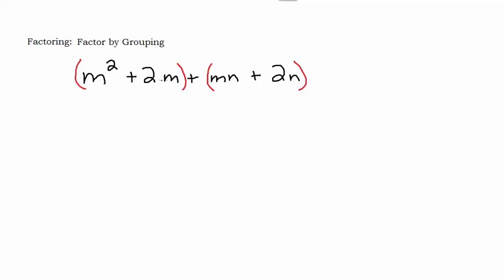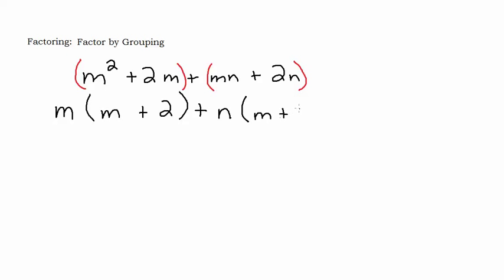I've got an m² and a 2m. They have a common factor of m, so I can take that m out of just these first two terms and I'm left with m plus 2. You can check that by distributing: m times m is m², and m times 2 is 2m. Now I'm going to bring my plus down and look at this second set of parentheses. Is there a common factor? I have mn and 2n — they both have a factor of n, so I pull that out and I'm left with m plus 2.